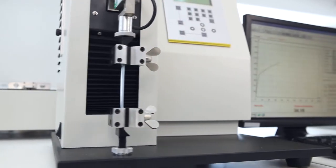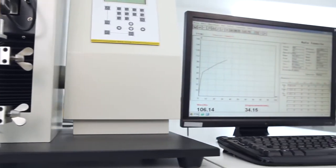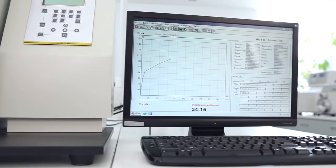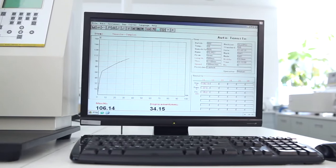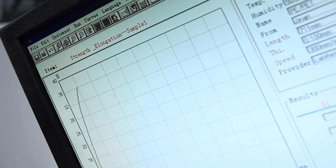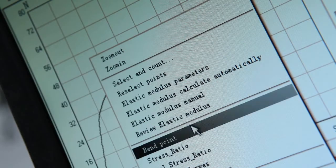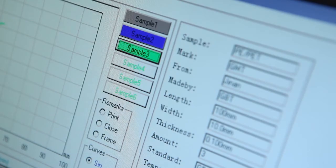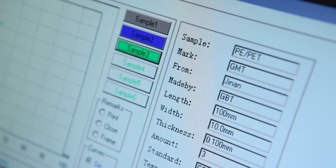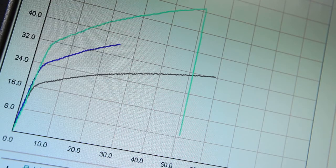The testing software designed by LabThink has an intuitive operation interface, visual display of real-time data and graphs. It can calculate the tensile stress at a given elongation, elastic modulus and stress strain, and carry out historical data comparison and curved superposition analysis.